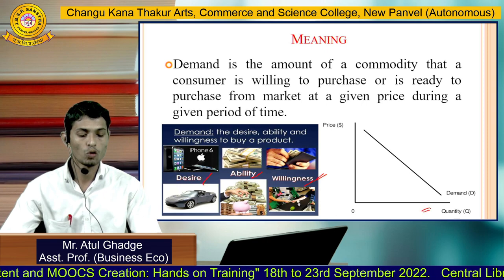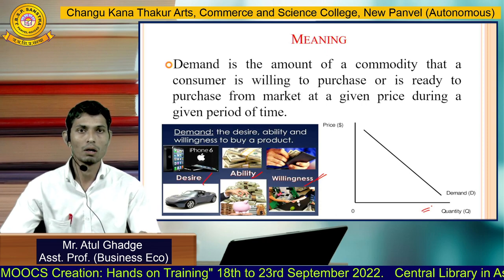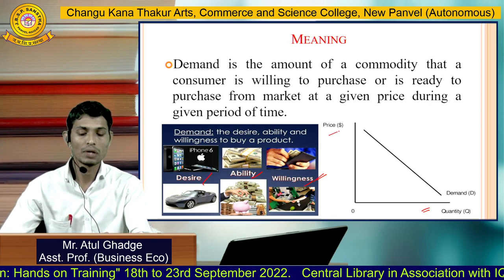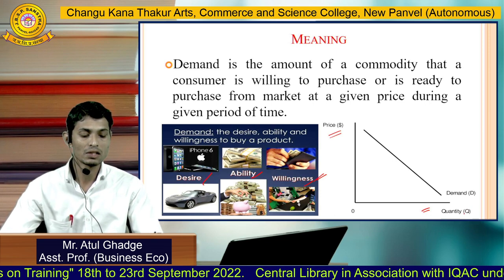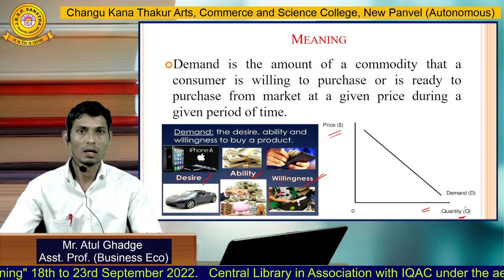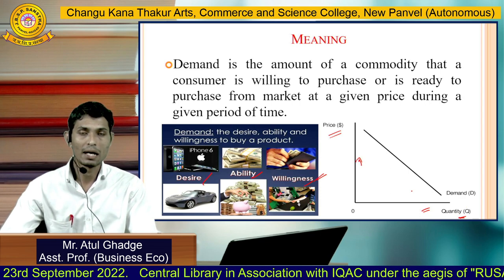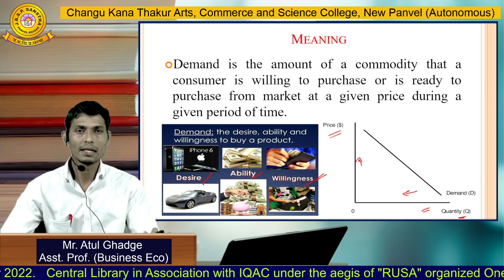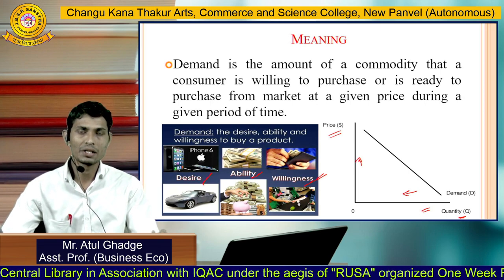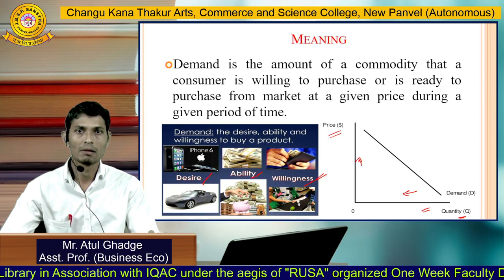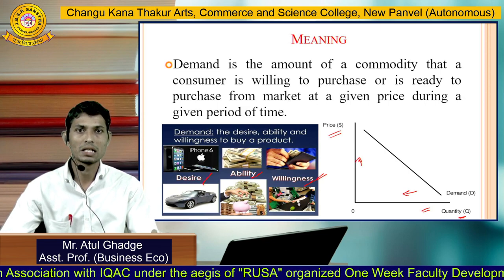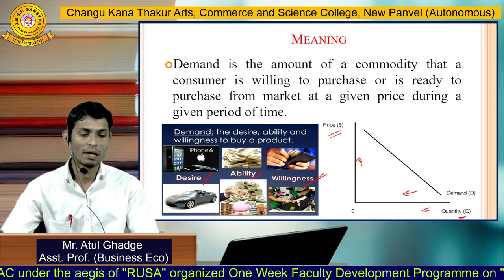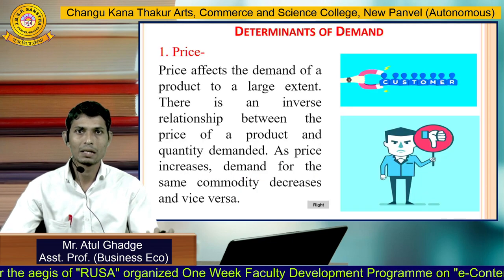You can see the diagram here — a negative slope of a demand curve going downward. On the Y axis we have price and on the X axis we have quantities. As price increases, demand for the commodity decreases and vice versa. So when desire, ability, and willingness — these three things are fulfilled — at that time I can call it demand. That is the meaning of demand.